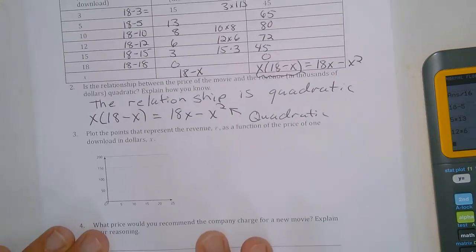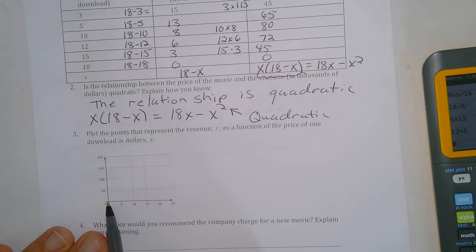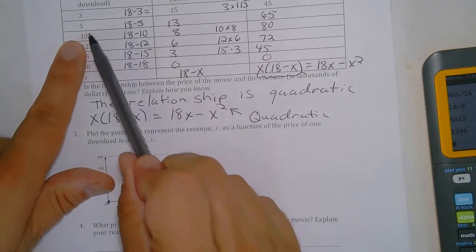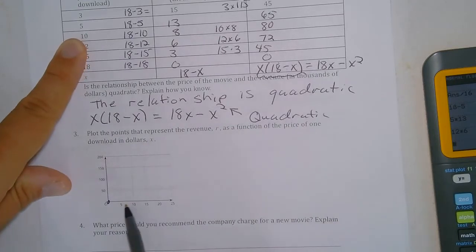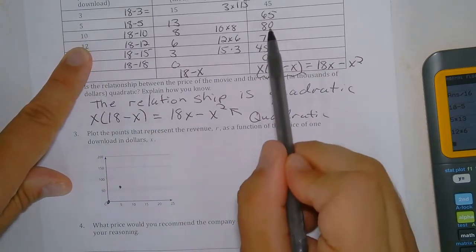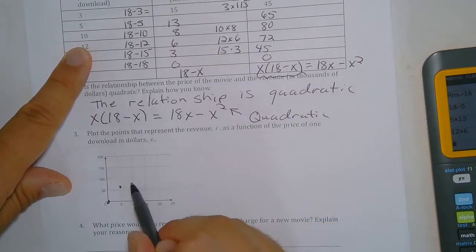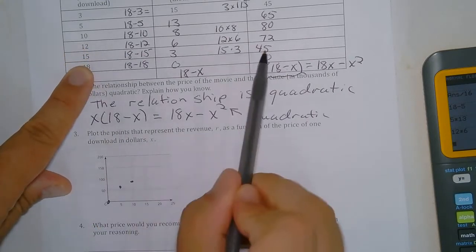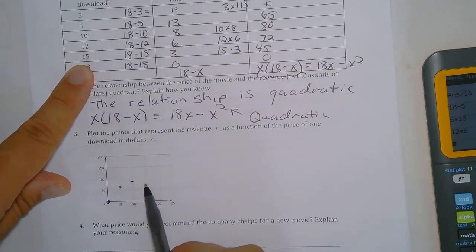So now if we were to plot these, at zero we would be at zero. Here I can just plot at five, the revenue brought in is 65, so I'm going to estimate right there. Here if my input is ten dollars, the output would be 80, so ten eighty is going to be about right there. If we're at 15, you're at about 45.